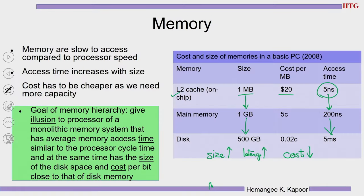The goal of the memory hierarchy — registers, cache, main memory, disk — is to give an illusion to the processor that it has a monolithic, large amount of memory available, with access time similar to the processor cycle time. We want to produce the illusion of big memory accessible at processor speed, with size almost equal to disk space and cost equal to disk cost. That is our aim of giving a nice memory hierarchy to the processor.